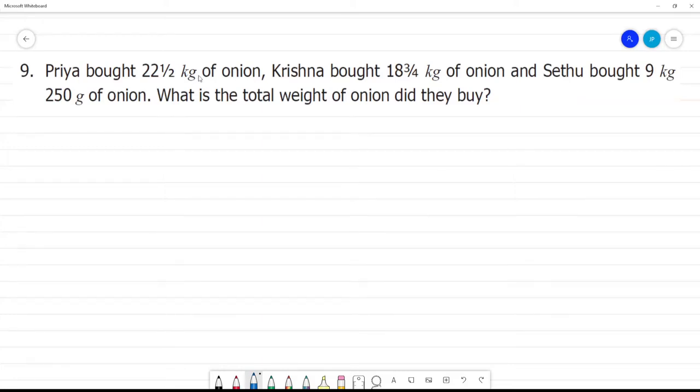Priya bought 22 and a half kg of onion. What does 22 and a half kg mean? That means 22 kg and 500 grams, because half kg equals 500 grams.